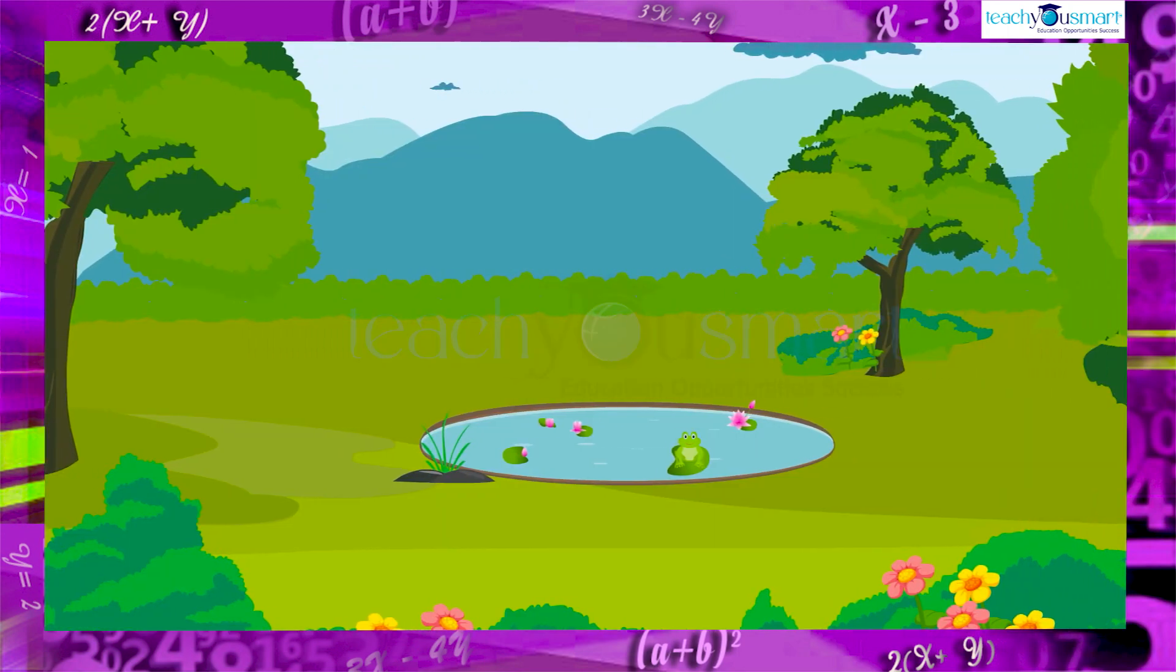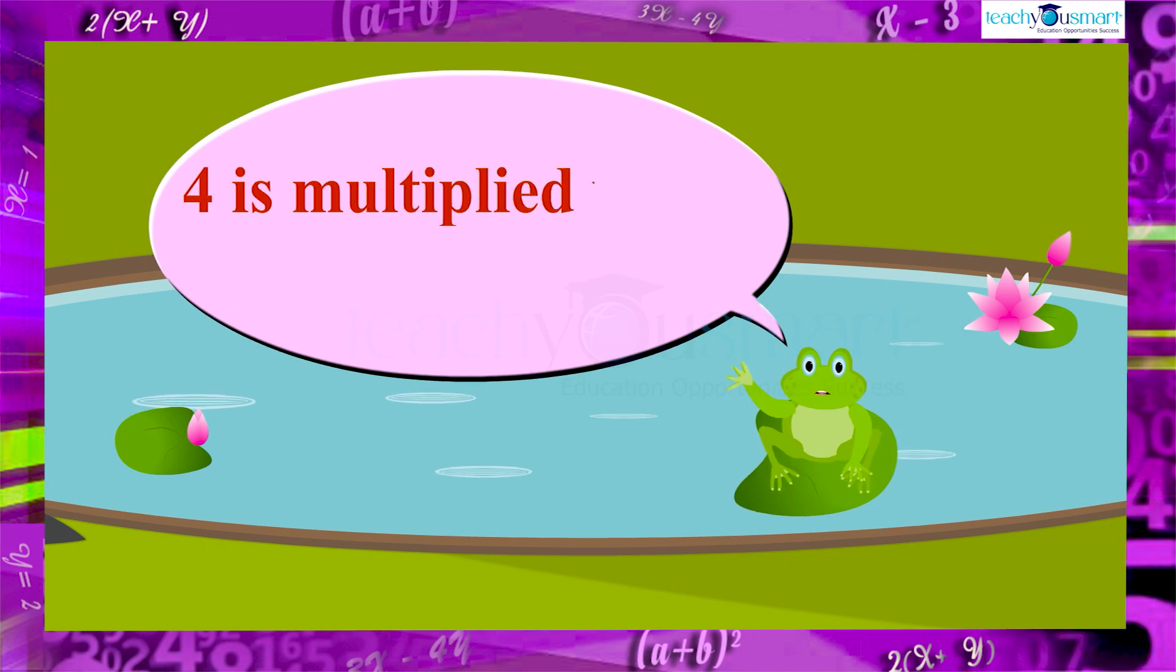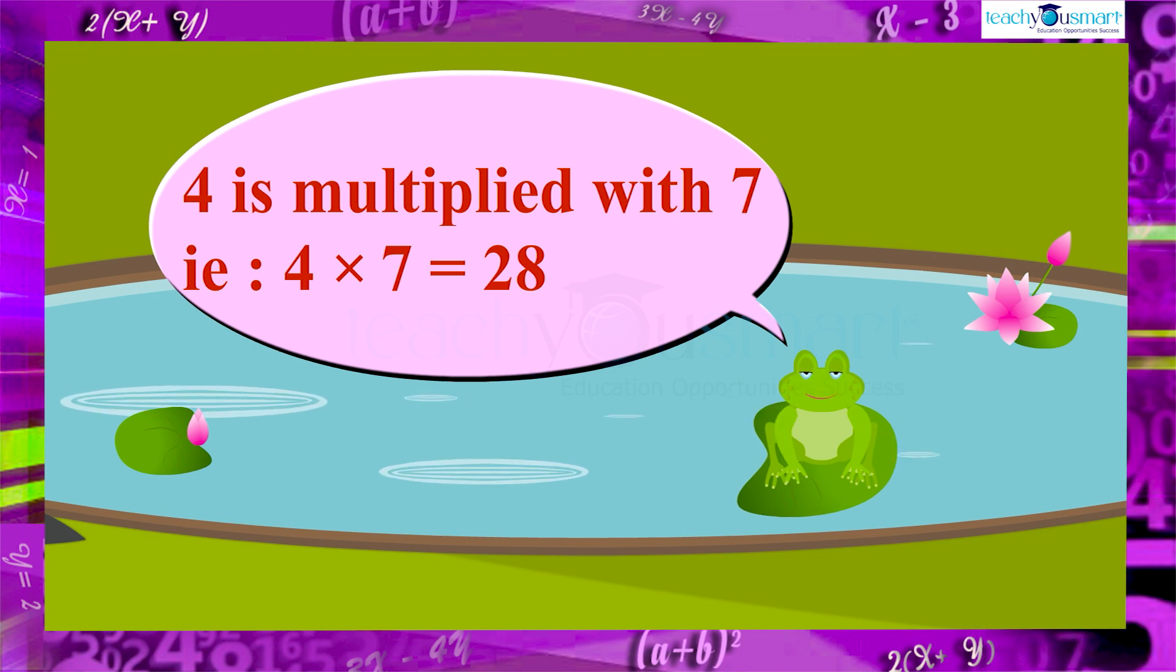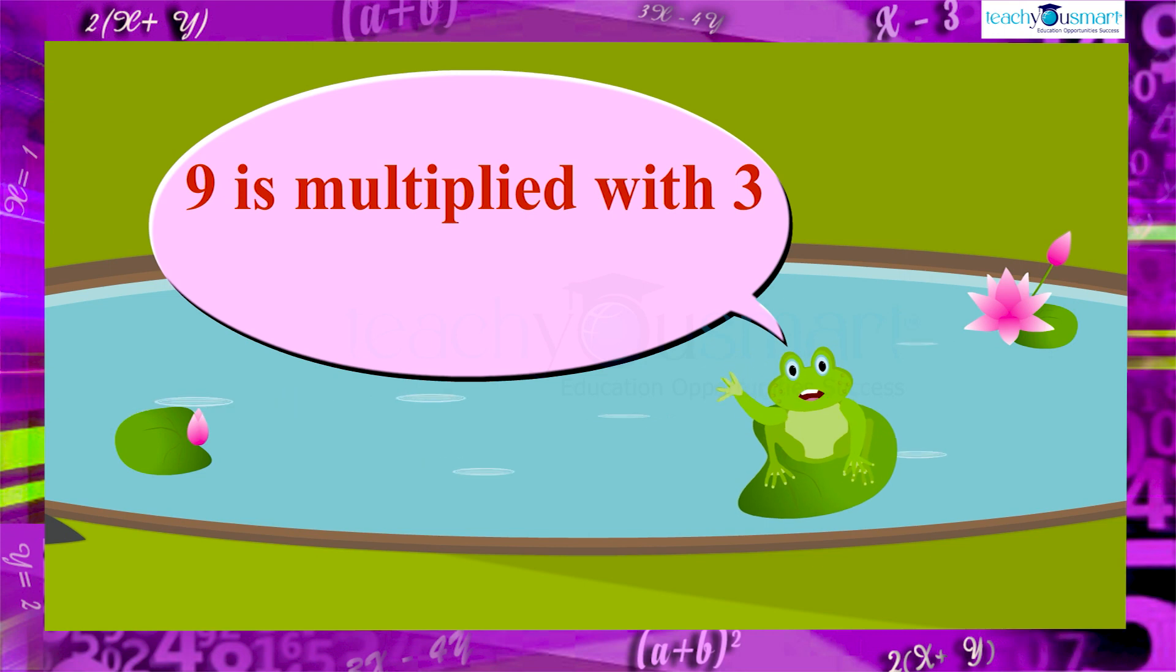We all know the multiplication of numbers. If 4 is multiplied with 7, that is, 4 multiplied by 7 equals 28. Or, 9 is multiplied with 3, that is, 9 into 3 equals 27.